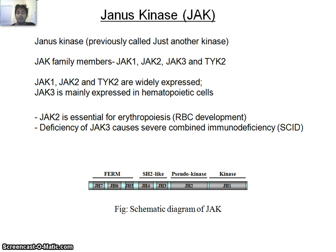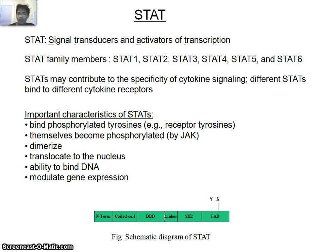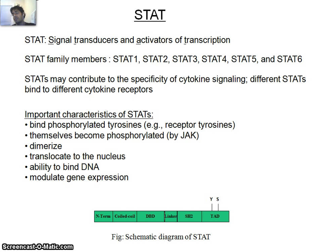The JAK-STAT pathway — JAK originally stood for 'just another kinase.' There are four family members: JAK1, JAK2, JAK3, and TYK2. They have SH2-like and other domains. STAT stands for Signal Transducer and Activator of Transcription. STAT family members include STAT1, STAT2, STAT3 through STAT6. These molecules can be translocated directly to the nucleus upon activation. The important feature is that STAT molecules travel directly from cytosol to the nuclear membrane upon activation by the JAK-STAT pathway.